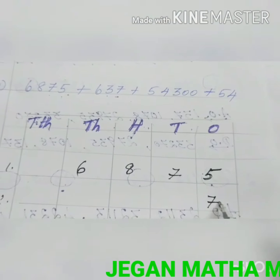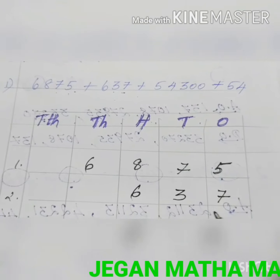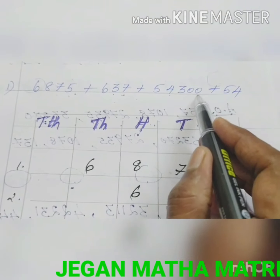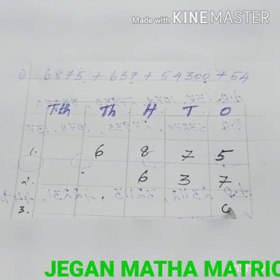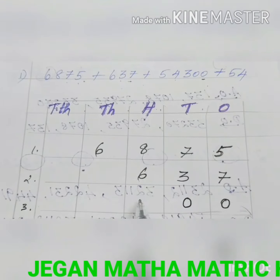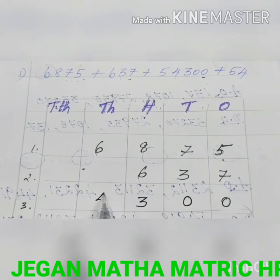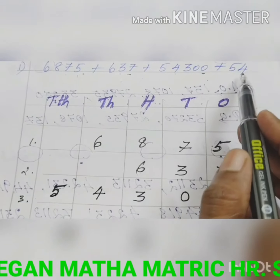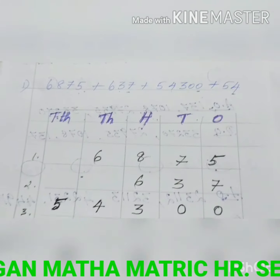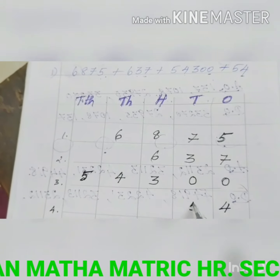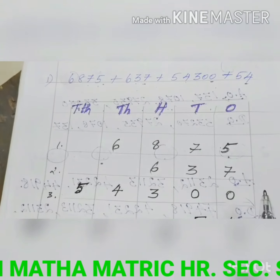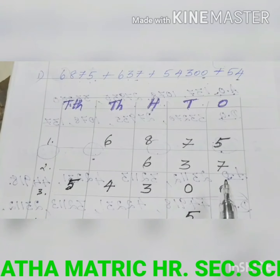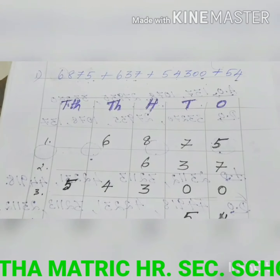For 54300: ones is zero, tens is zero, hundreds is three, thousands is four, ten-thousands is five. For 54: ones is four, tens is five. First separate all the digits like this, then add one by one, writing each number in its correct place value.